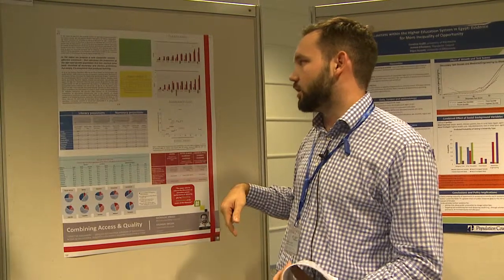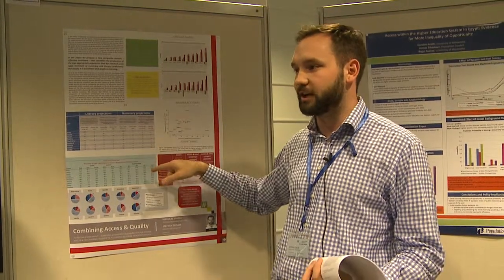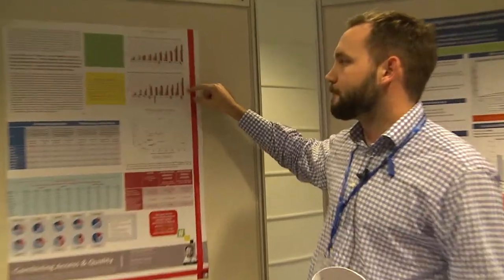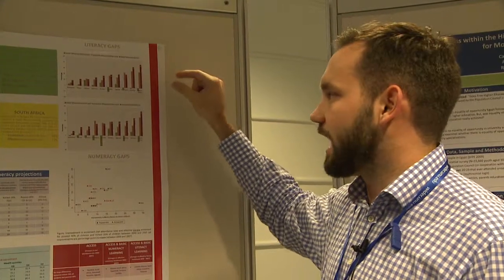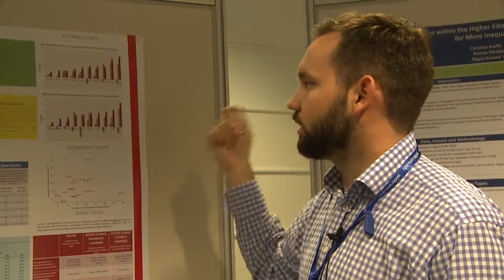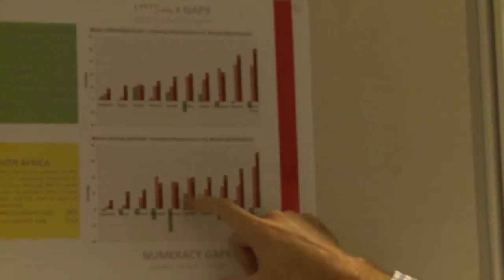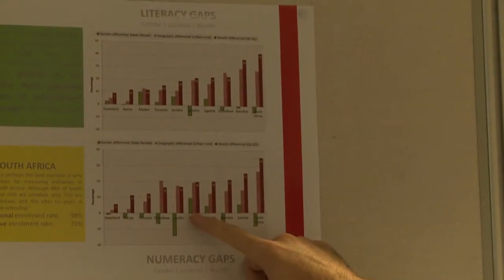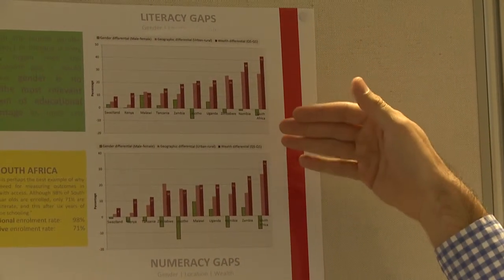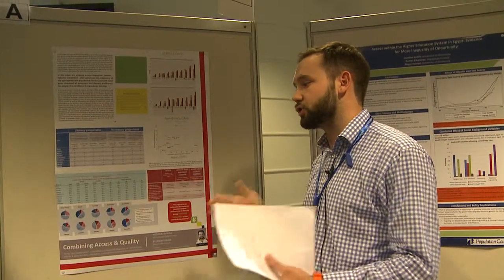We disaggregate the statistic by gender, wealth quintile, and urban versus rural location, and calculate gaps in our effective enrolment measure shown in these graphs. One interesting finding is that the gender gap in every country is far smaller than the urban-rural gap or the wealth gap. In Malawi, the largest gender gap is only 10%, whereas the urban-rural gap is 20%, and in Zambia it's five times as high. Gender is not the largest dimension of inequality — it's actually urban-rural location and socioeconomic status.